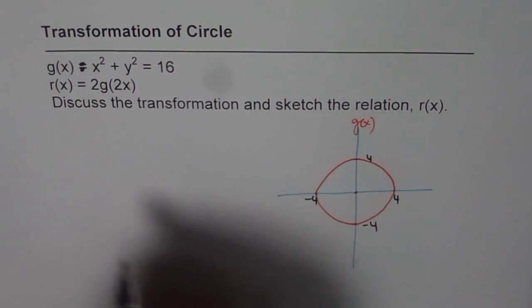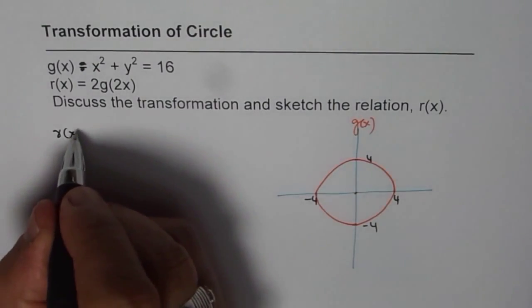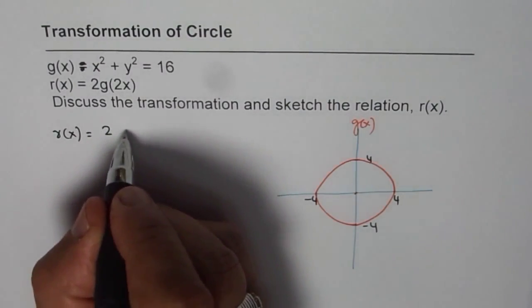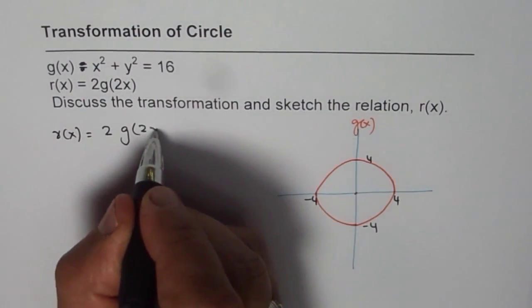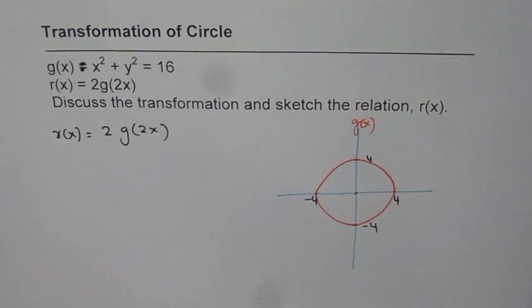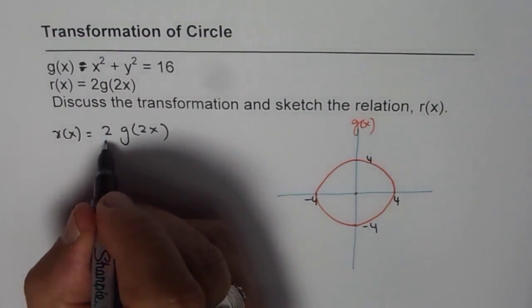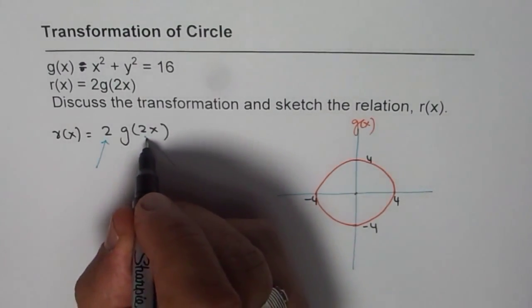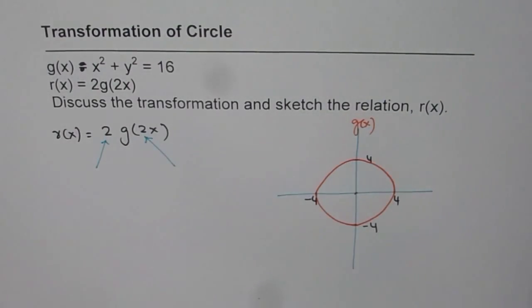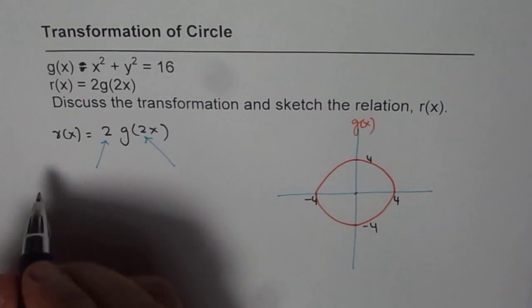Now what we need to sketch is r of x. r of x is 2 times g of 2x. Now can you explain these transformations? What is the meaning of this 2 and what is the meaning of this 2? Let us begin with the 2 outside.